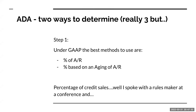We have a percentage of accounts receivable, and then we have a percentage based on an aging of accounts receivable. There's also one that is a percentage of credit sales, but I spoke with a rules maker and they said don't do it — stick with the balance sheet approach. So what we're really doing is looking at our ending balance of accounts receivable and saying this is what we are expecting to collect. This is why we call it a balance sheet approach.